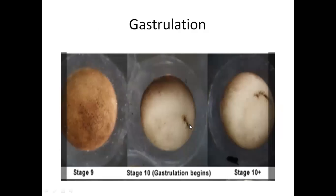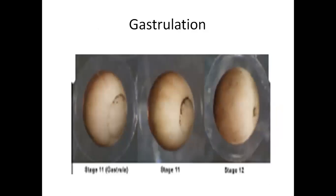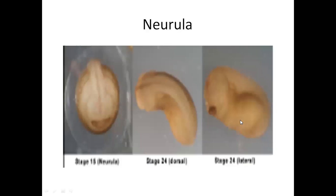Gastrulation ke andar yeh archenteron hai, the opening of the archenteron - gastrulation ki start ho gayi hai. Gastrulation - you can see this gastrulation, stage 11 and stage 12. This is neurula, this is neurula, neural formation has taken place and this is neurula.